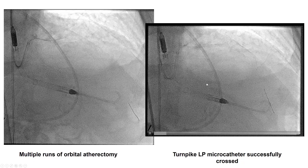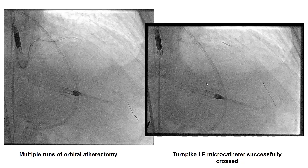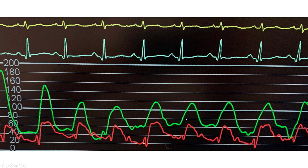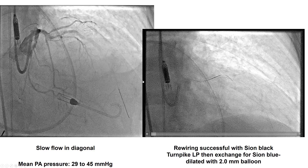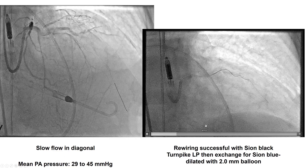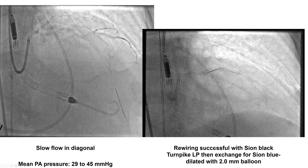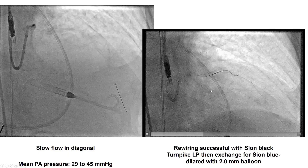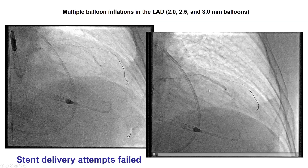After doing that, we were able to do multiple runs of orbital atherectomy, and then the Turnpike LP successfully crossed. However, we did have an increase in PA pressure — and this is one of the nice things about having PA pressures constantly monitored, as we saw early signs of a problem. We took an image and there was compromise in flow to the diagonal, likely from the atherectomy. We rewired the side branch using a Sion Black wire, switched to a workhorse wire, and performed balloon angioplasty that helped to stabilize the patient.